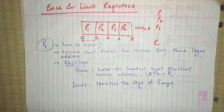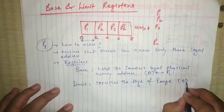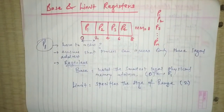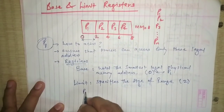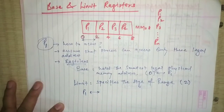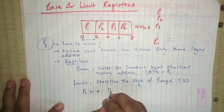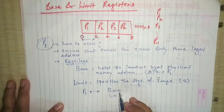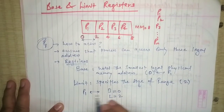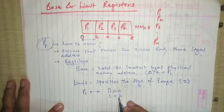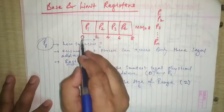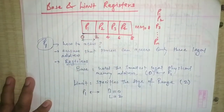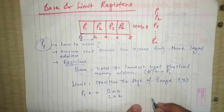For process P1, the size is 2 units. So in the case of P1, the base register will be zero and the limit register will be two. P1 starts from zero and has a range of two. This is how the base and limit registers describe where and how large a process is in memory.